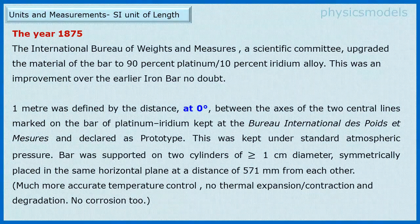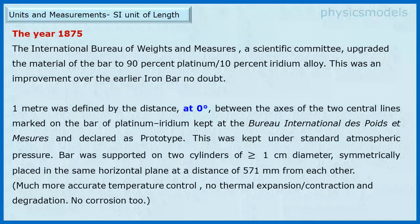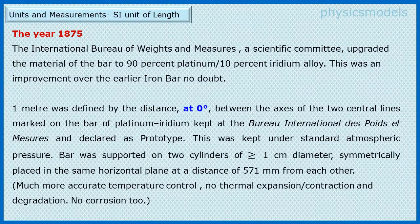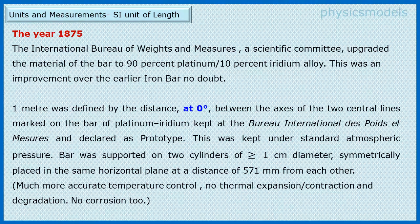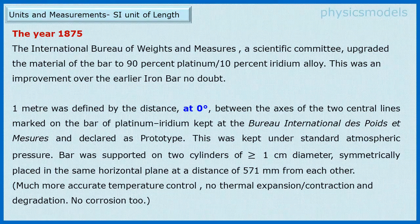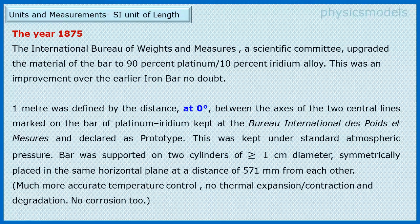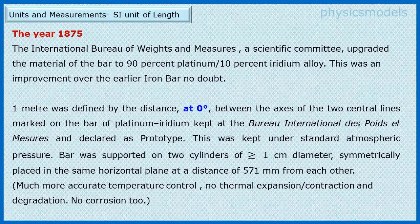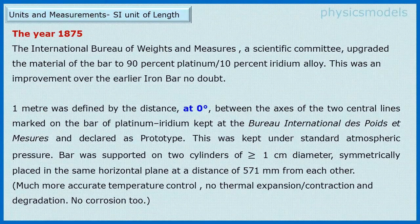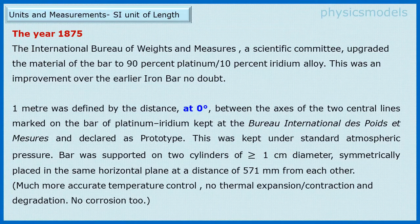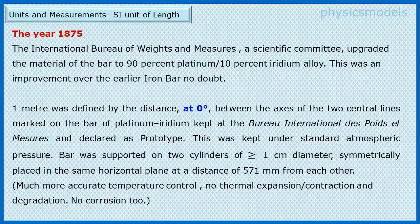85 years later in 1875, scientists could improve the material from iron to platinum iridium and they could also have better temperature control. So they defined 1 meter as the distance at 0 degree centigrade between two marks made on that bar of platinum iridium and properly supported and so on.